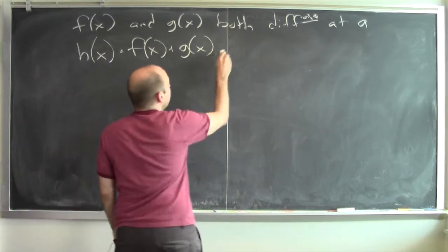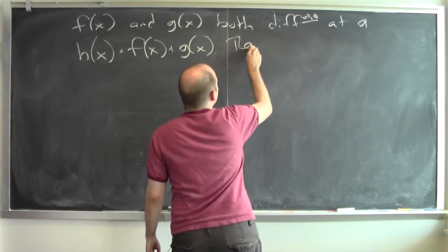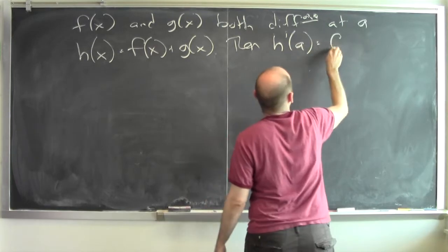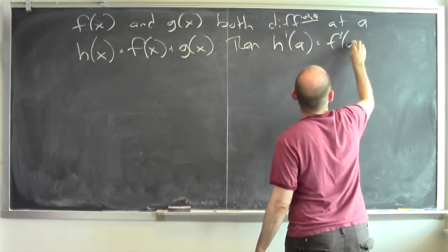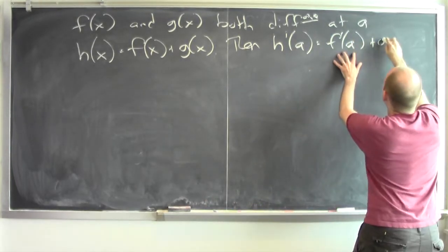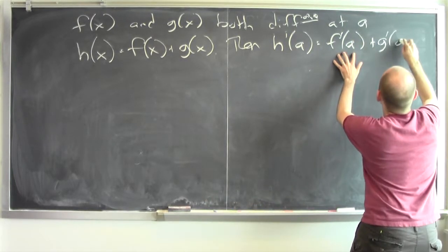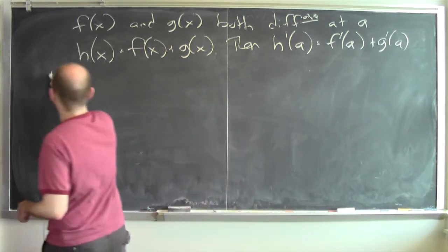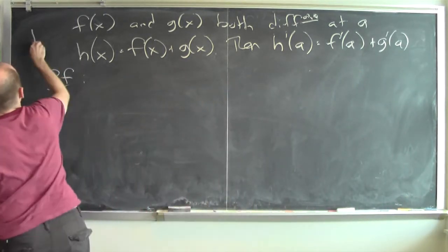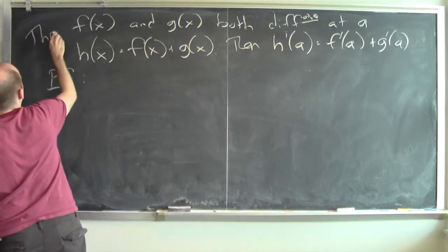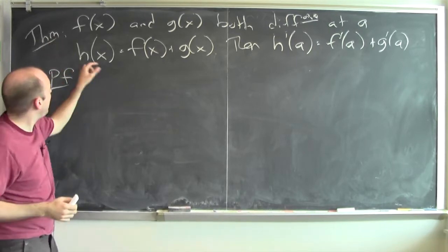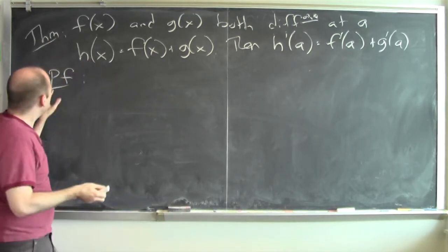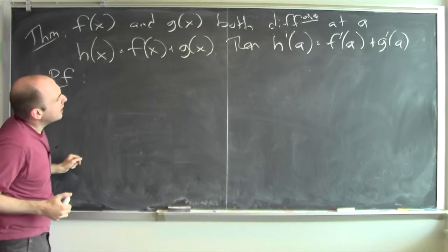Now here's the conclusion. Then h prime of a is just the sum of the derivative of f at a and the derivative of g at a. This is really a theorem — a theorem that tells me how to compute the derivative of a sum of functions. And how do I prove something like this?